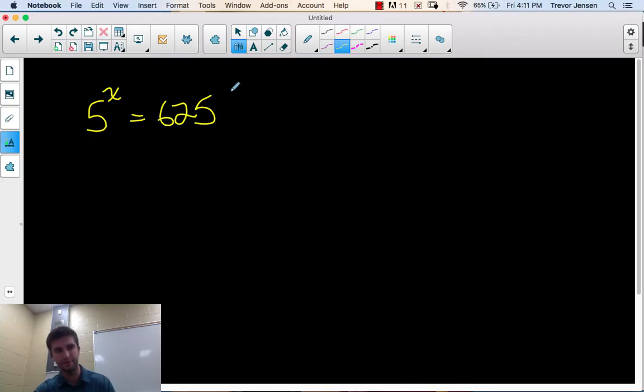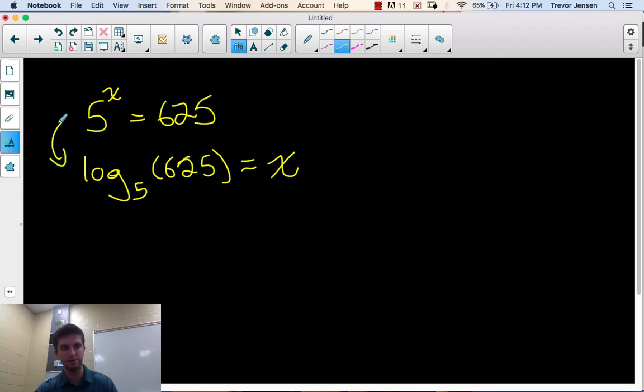I can convert from exponential to logarithmic by taking the base of the power and writing it as the base of the log. So log base 5 of 625 will solve for me what the unknown exponent is. These two expressions are equivalent to each other. 5 to the x equals 625. So if I evaluate this, it will tell me the exponent that goes on the base to get the argument.